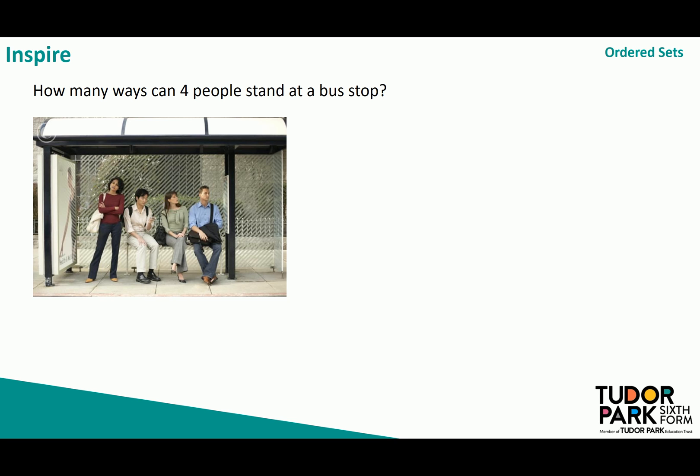Well, if this group wasn't stood there I would have a choice of four different people to be this first person at the bus stop. Once I've picked one person from that group there would only be three left for that second choice, two left for the third choice and I'd only have one person left for the fourth choice. Now this four times three times two times one in mathematics we write down like this and we read it as four factorial.